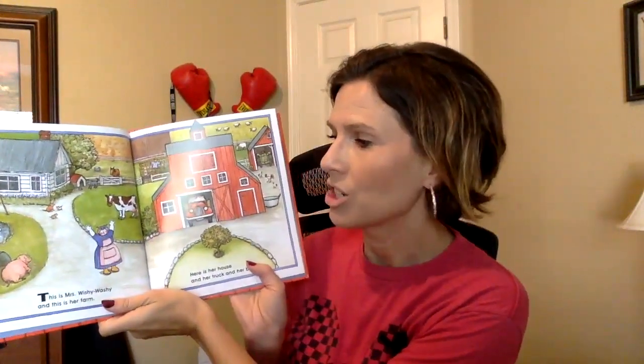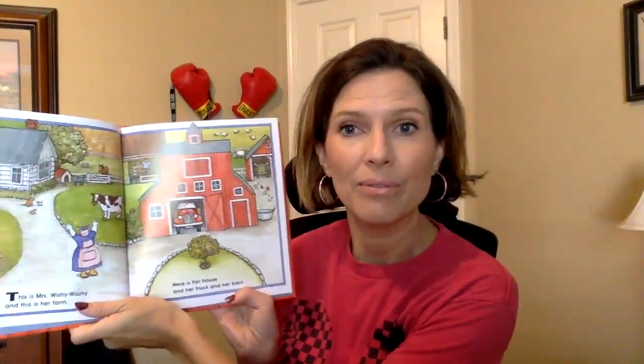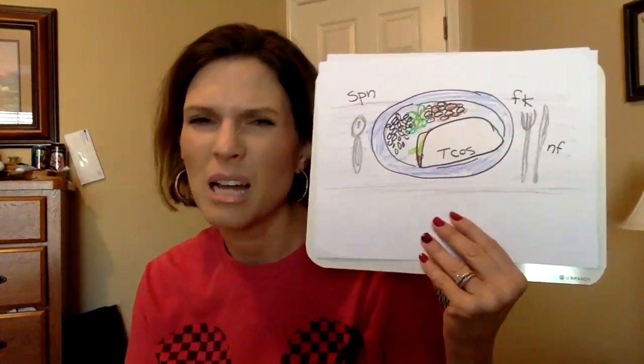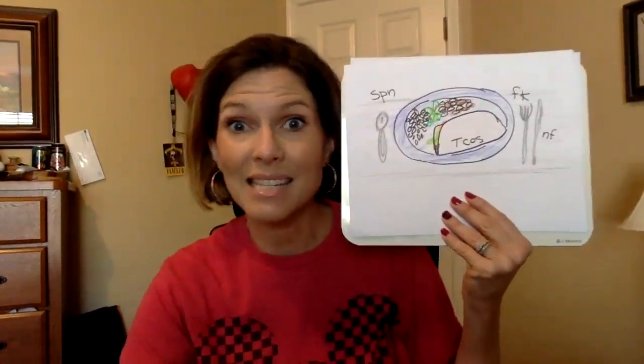So we use sentences to tell a story. Let's see how the author started the story. This is Miss Wishy-Washy and her farm. Here is her house and her truck and her barn. Do you see how she's starting to tell her story? She's introducing where they're at and the characters. So I want to say a little bit more about my picture — besides just labeling it, I want to say something about it.